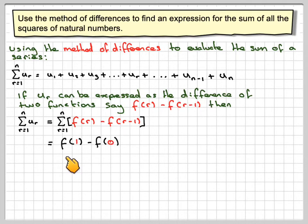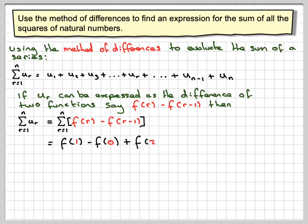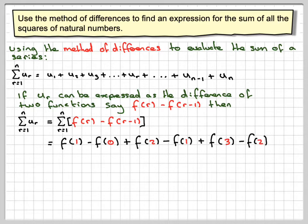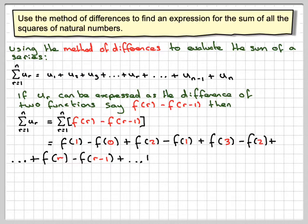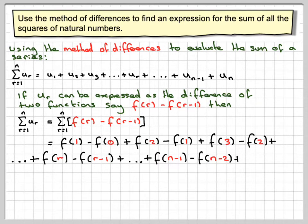So if we write this out, putting in the first term: f(1) minus f(0), plus the second term f(2) minus f(1), plus f(3) minus f(2), and then so on. The general term will become f(r) minus f(r-1). The last but one term will become f(n-1) minus f(n-2), and the last term will become f(n) minus f(n-1).